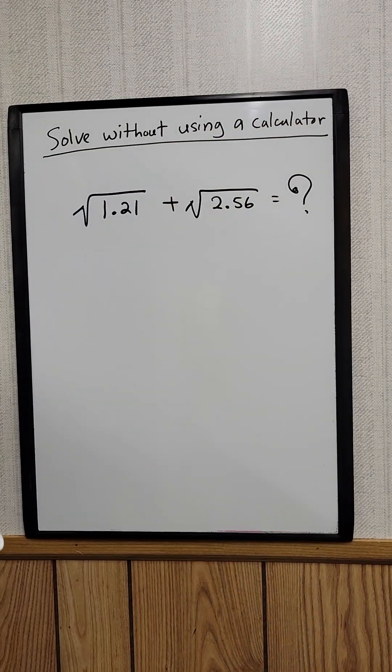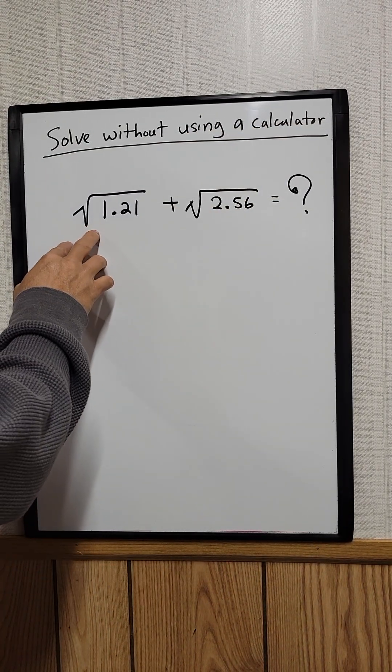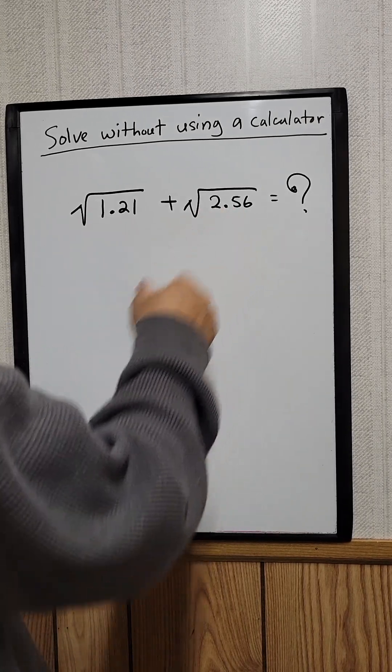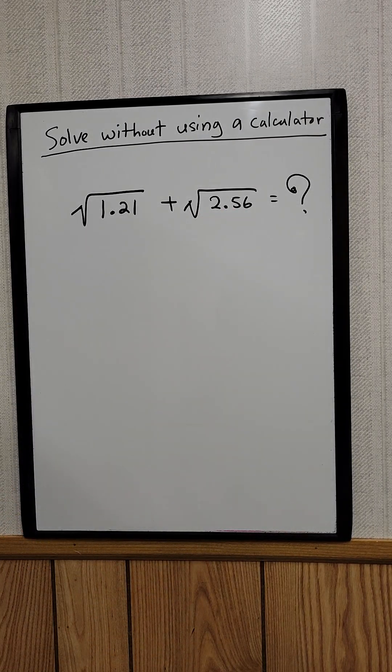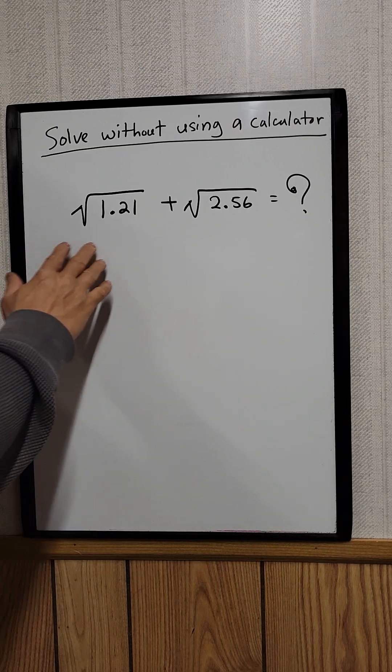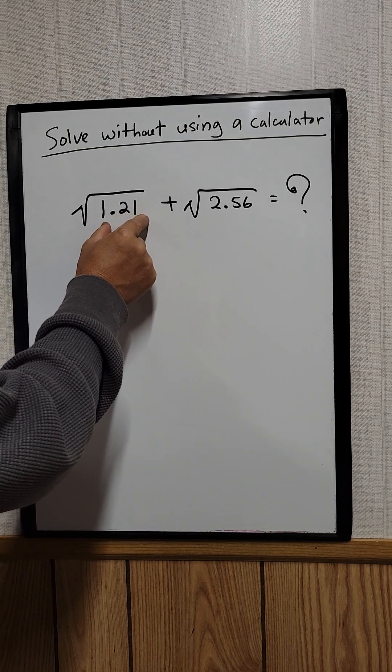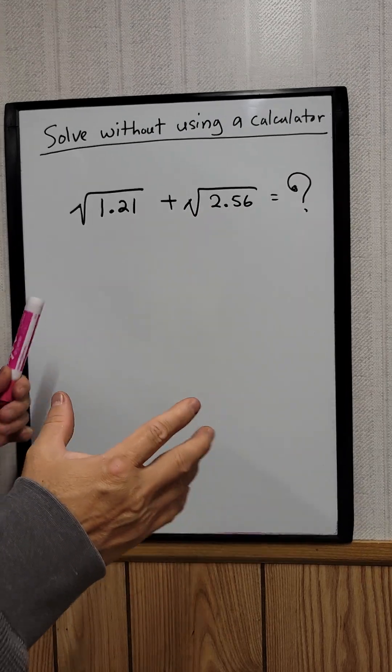Can you solve this without using a calculator? The square root of 1.21 plus the square root of 2.56 equals what? Without using a calculator, can you solve this? In order to solve this, we need to convert the 1.21 and the 2.56 into fraction form.